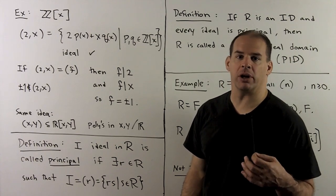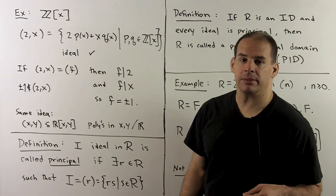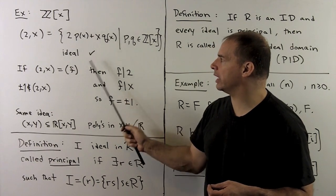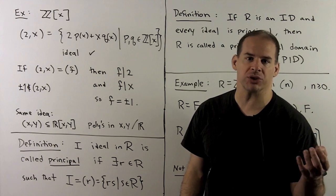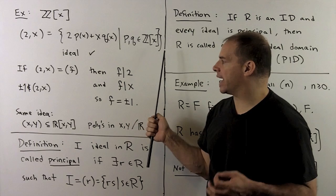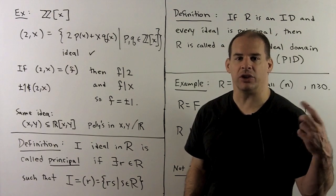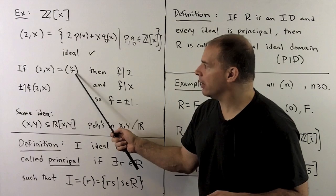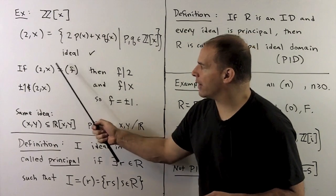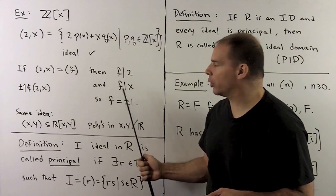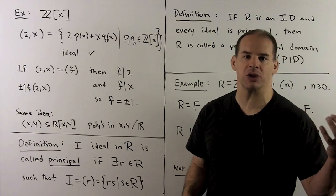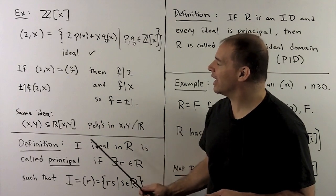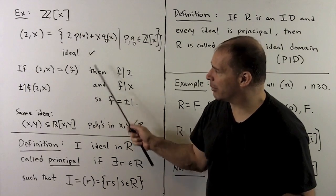For an example of an ideal that must be generated by two or more elements, let's consider the ring ℤ[x]. Consider the ideal generated by 2 and x; by definition this is 2p + xq, where p and q range over all polynomials in x over ℤ. If we assume this ideal can be generated by a single element f, then f divides 2 and f divides x. Thinking about polynomials, the only possibility is f = ±1. But ±1 is not in this set — contradiction. So I can't write this ideal as generated by a single element.